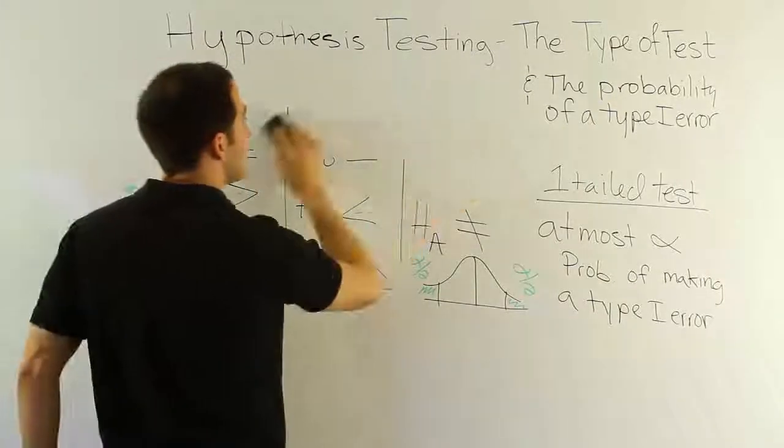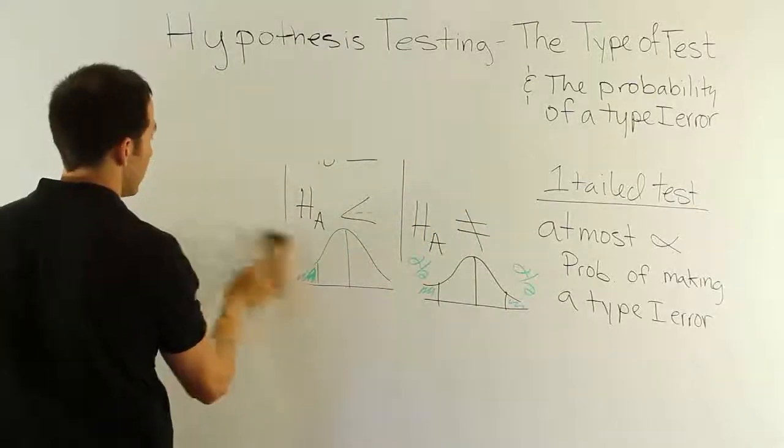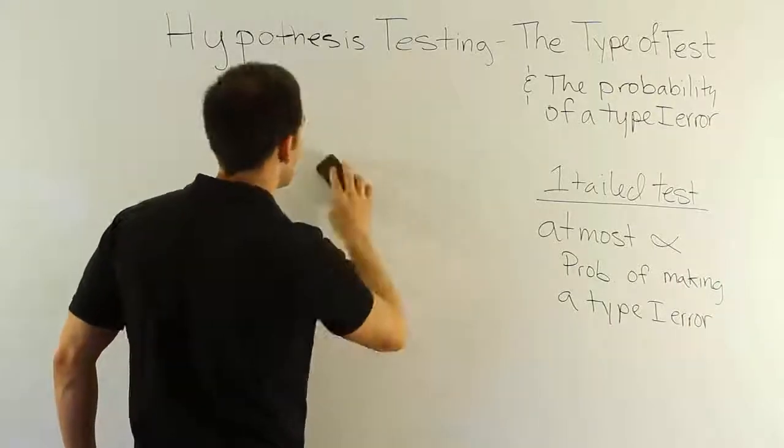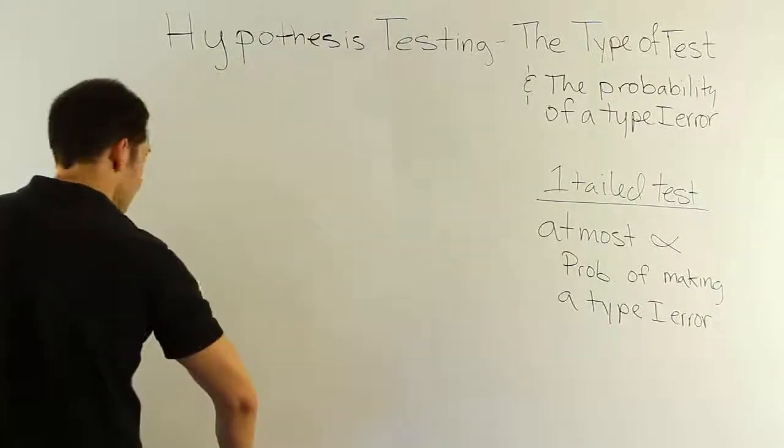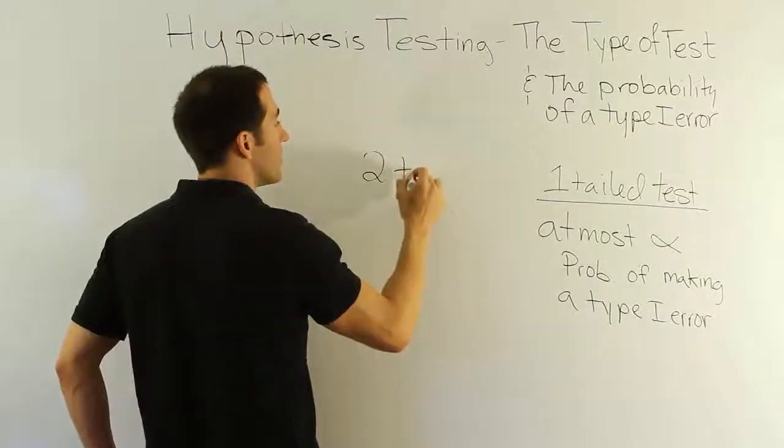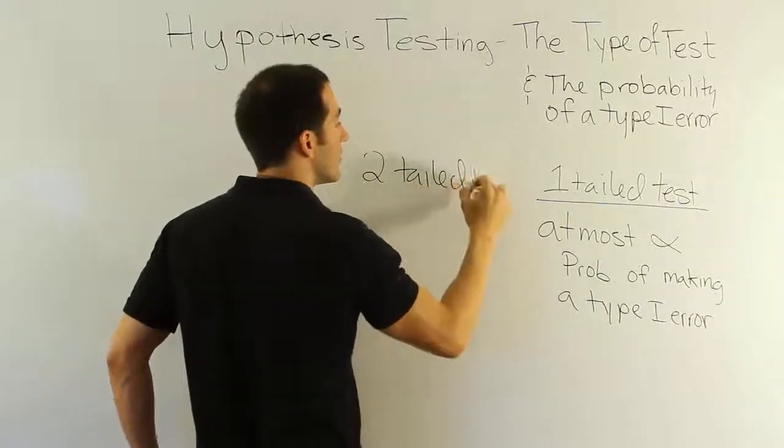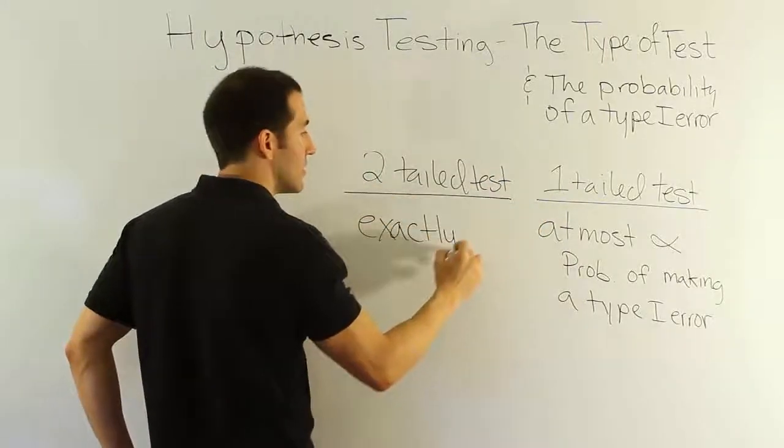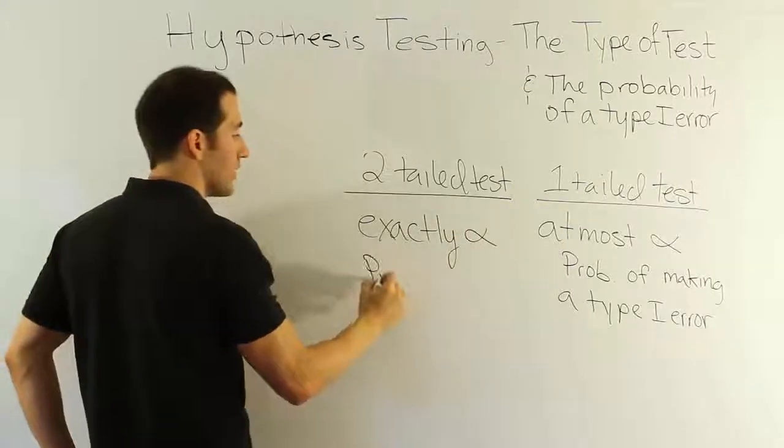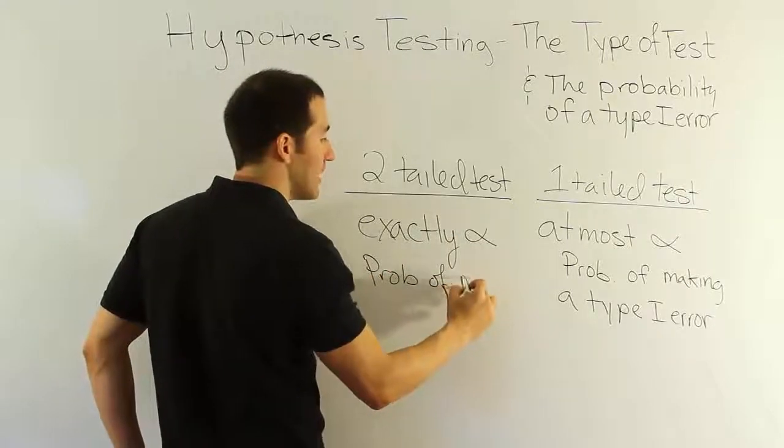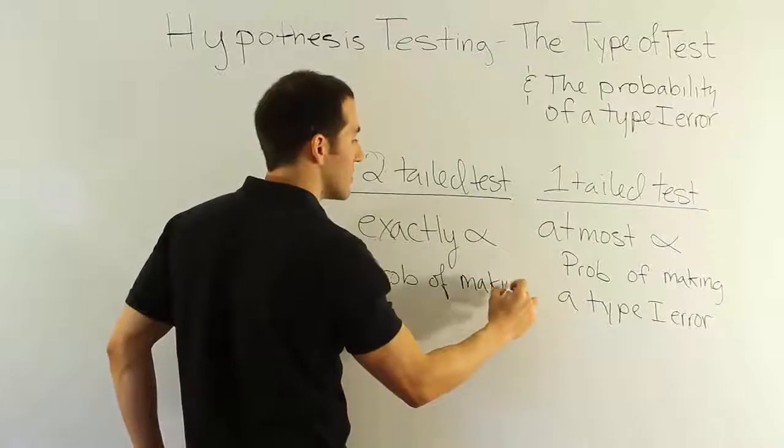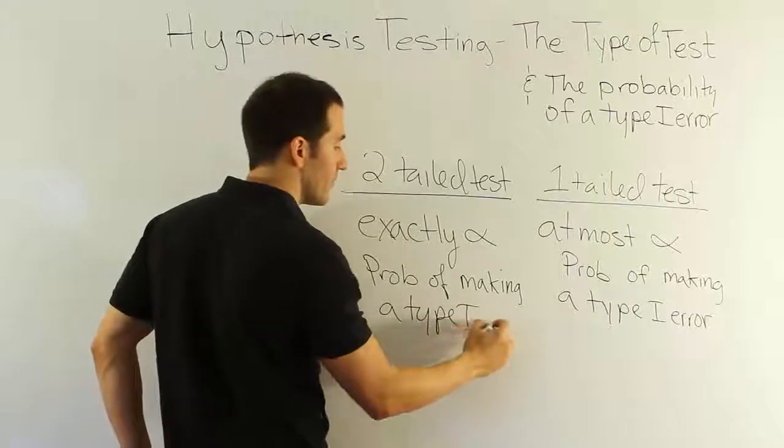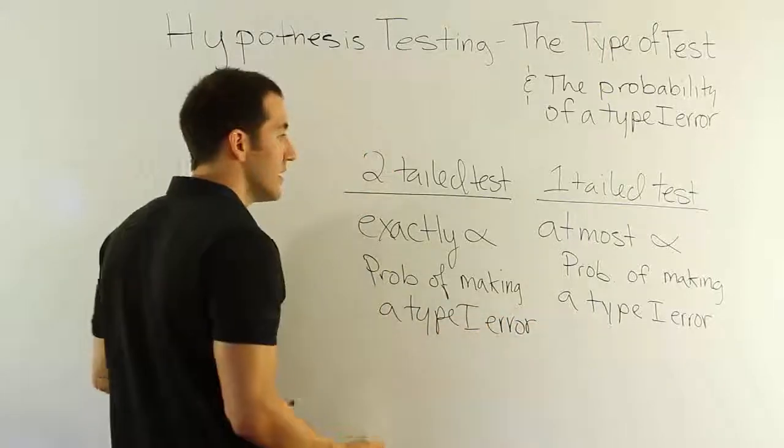So that's for the one-tail test scenario. For the two-tail test scenario, in a two-tail test scenario, we're going to say we have exactly alpha probability of making a Type 1 error.